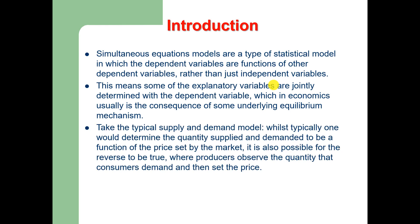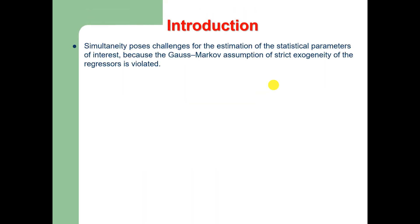If we take the example of a supply and demand model, whilst typically one would determine the quantity supplied and demanded to be a function of the price set by the market conditions, it is also possible for the reverse to be true, where producers observe the quantity that consumers demand and then set the price.